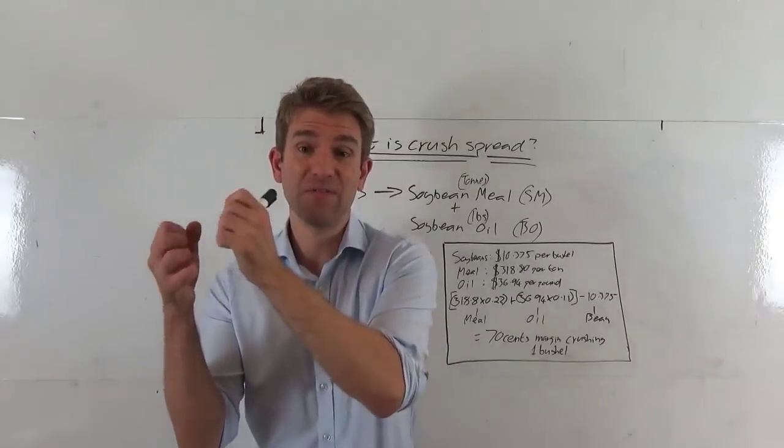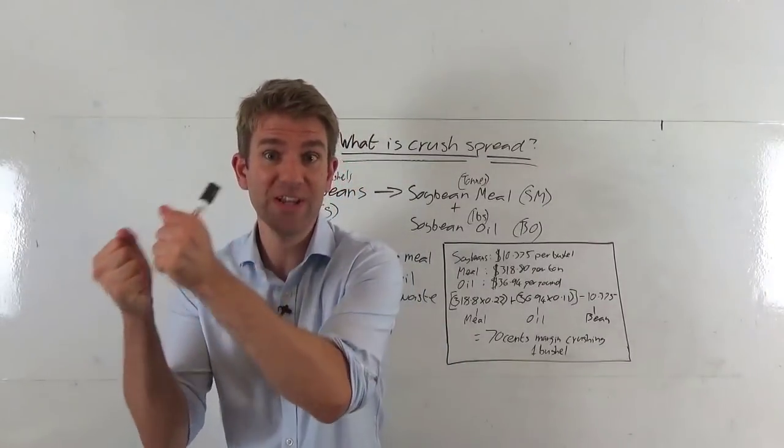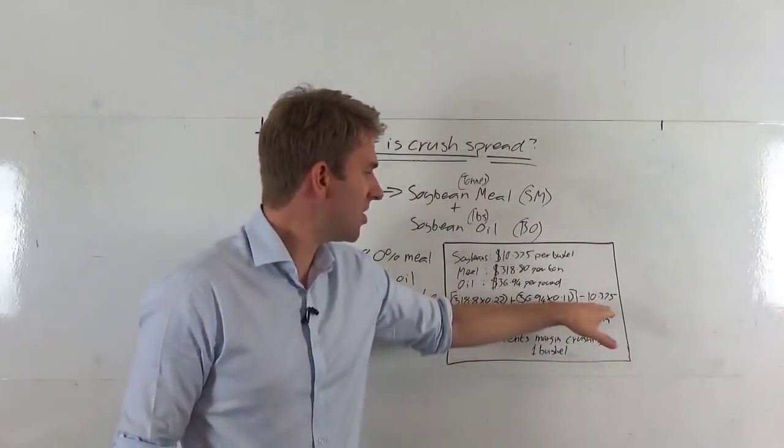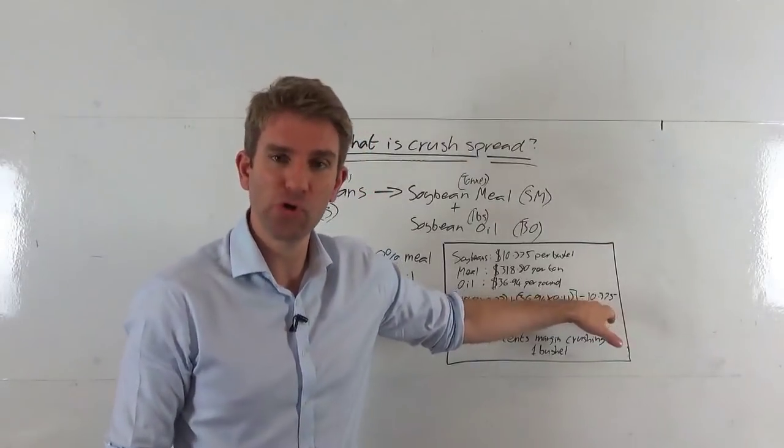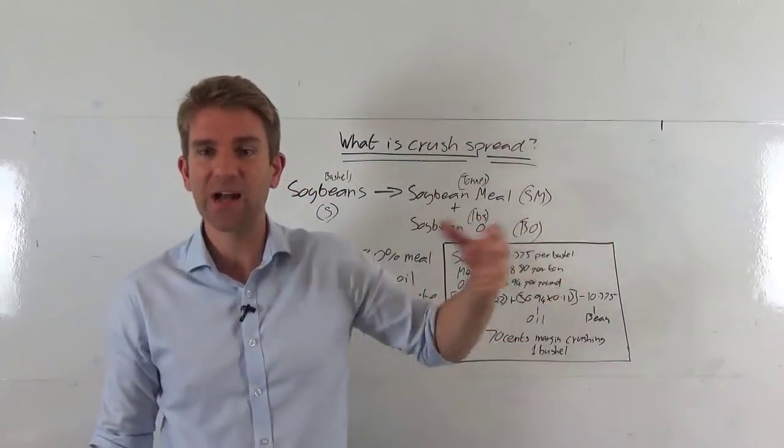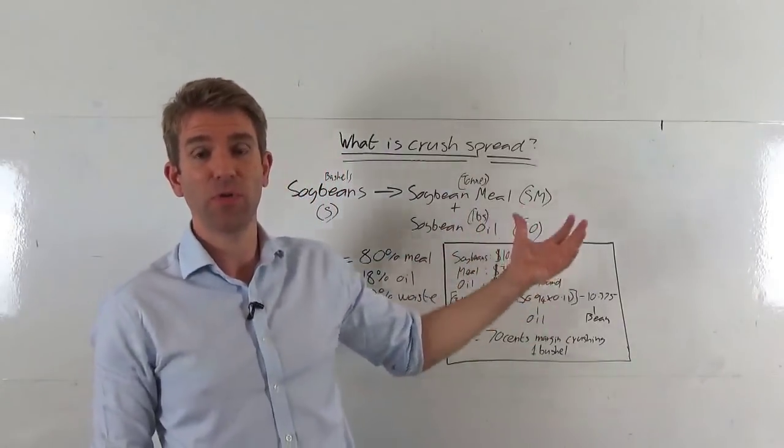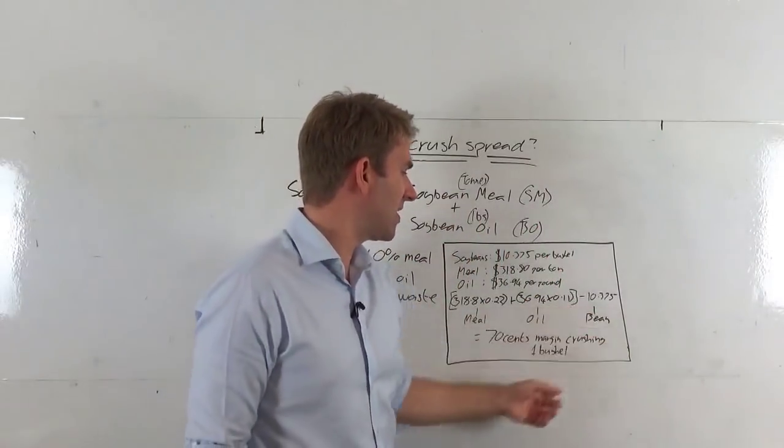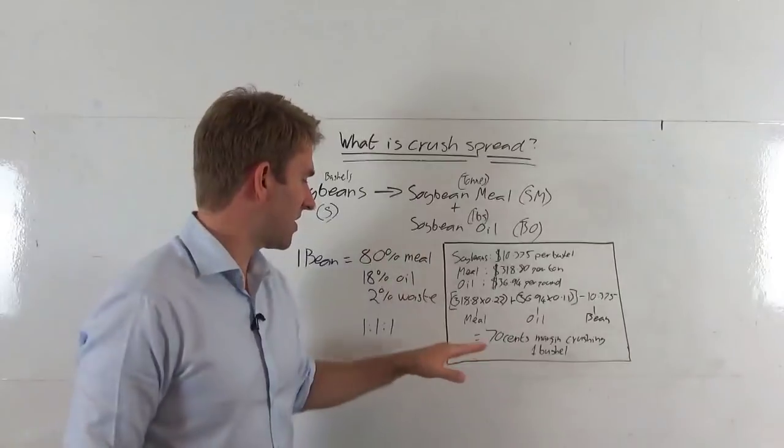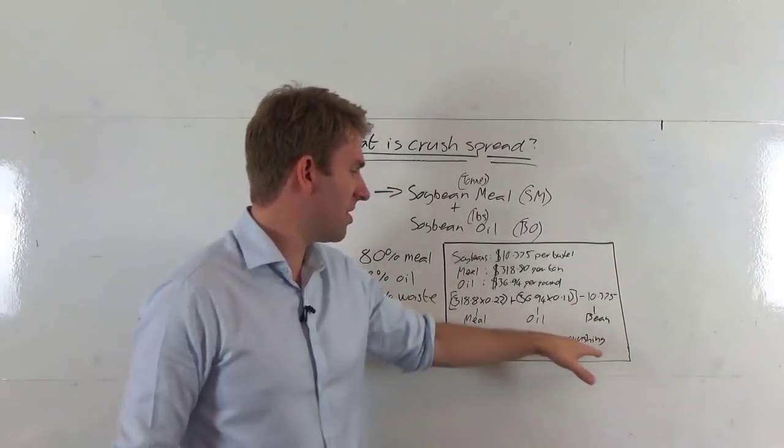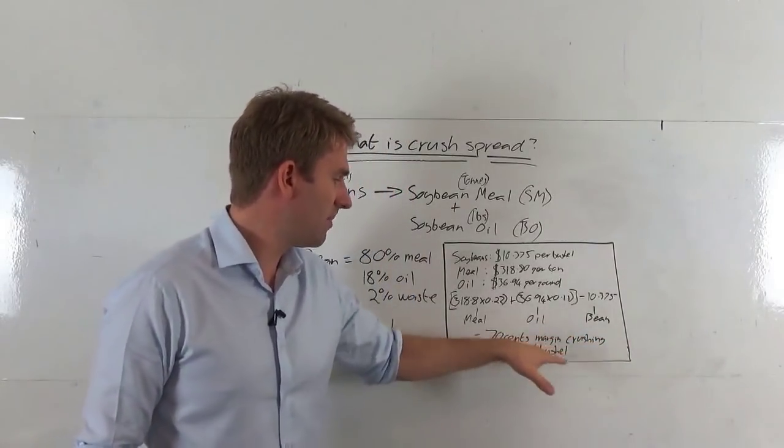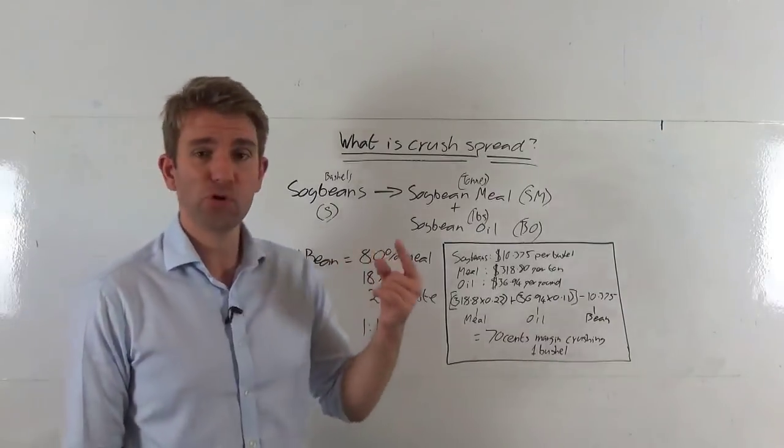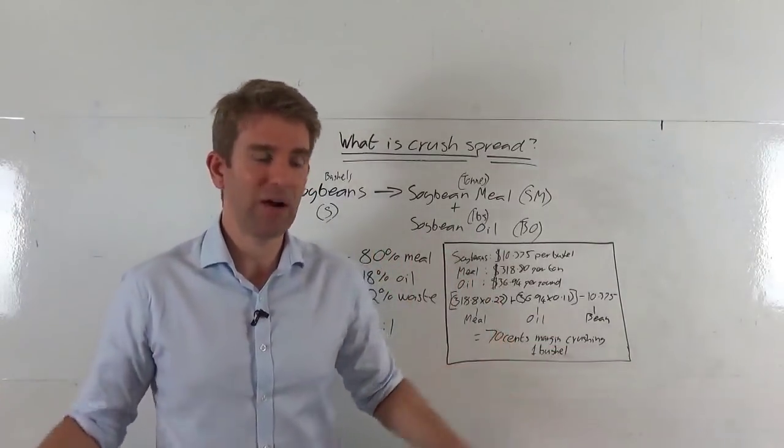Once we've got those two numbers, we add those together because that's the value of the product that we've crushed into. We take away the cost per bushel that we've put into the actual crushing process, how much it's cost us to put those soybeans in. Then we come up with a final answer, and the final answer of this is 70 cents crushing margin per one bushel. So for every bushel we put in, we're making 70 cents.